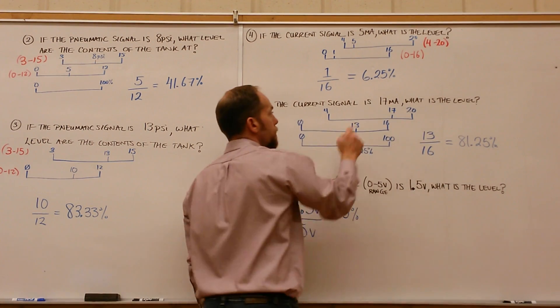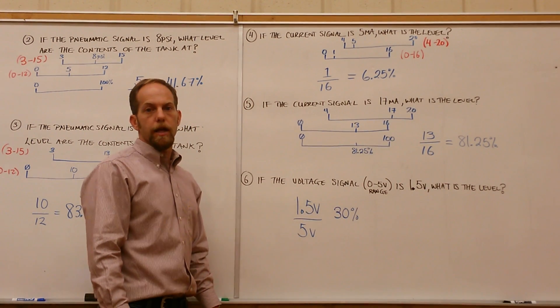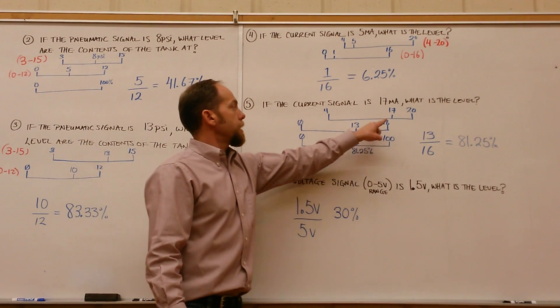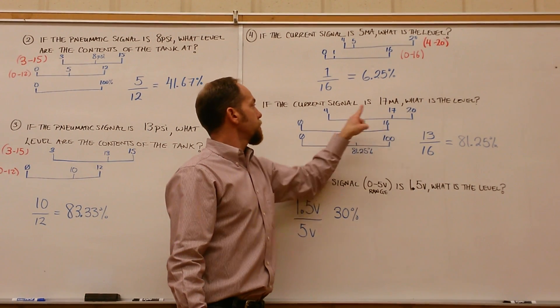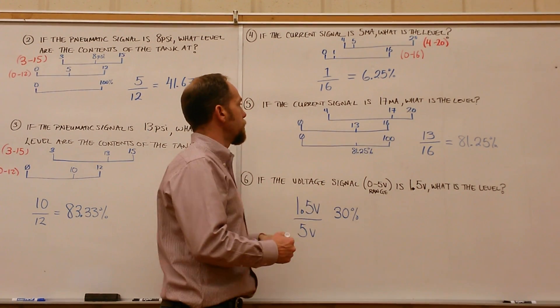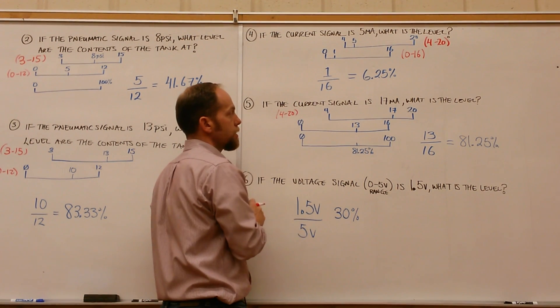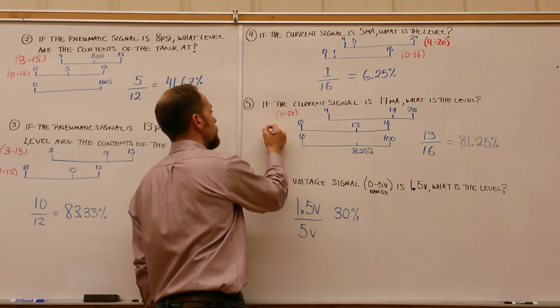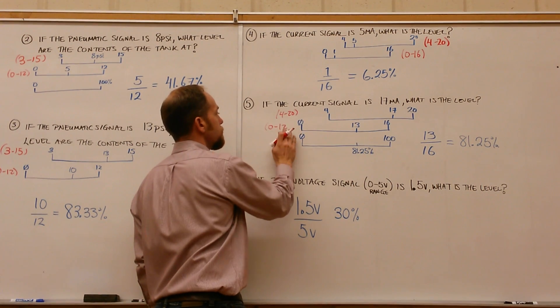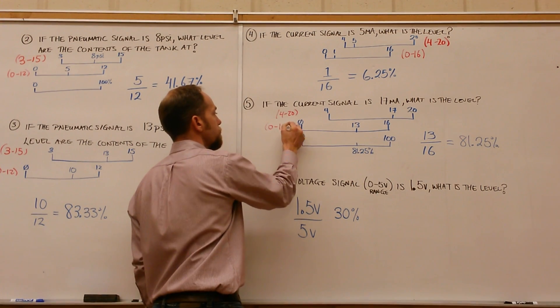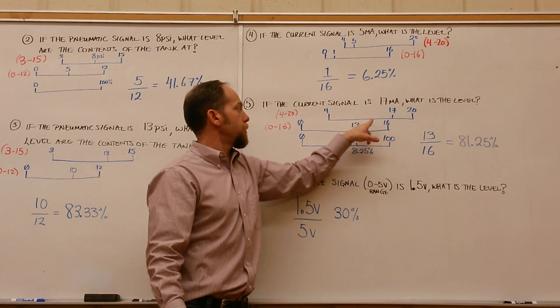If the current is bumped up to 17 milliamps, what's the level? Again, take 4 off that value. Drop it down to a 0 to 16 range. We have a 4 to 20 range that we're reading 17 milliamps on, and we're going to drop that down to 0 to 16.